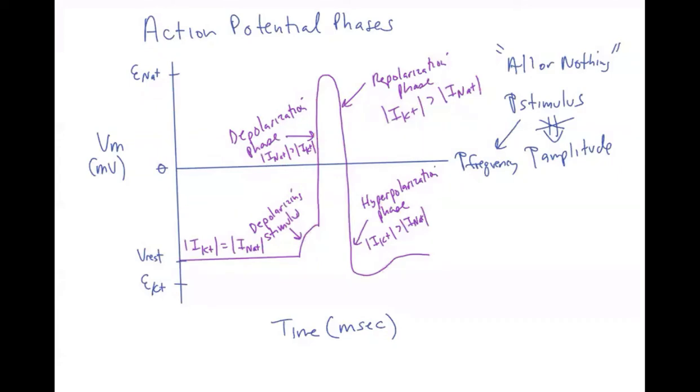Also, in terms of the amplitude, assuming you're not doing any of those things, the amplitude is all or nothing. A bigger stimulus does not result in a bigger-sized action potential. Instead, you end up with a higher frequency of action potentials, and that is how the stimulus is coded.